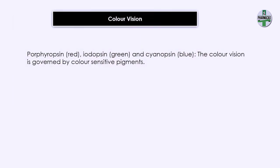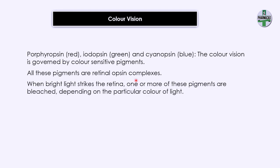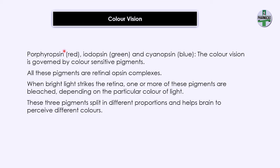In color vision there are three color-sensitive pigments: porphyropsin (red), iodopsin (green), and cyanopsin (blue). These are retinal-opsin complexes, and when light falls on the retina, these three pigments are bleached based on the color of the light. They are split in different proportions, and based on these proportions the brain perceives different colors.